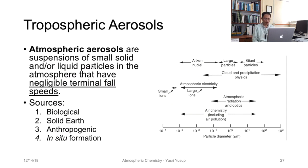These particles with negligible terminal fall speeds are suspended in the atmosphere. There are four sources of atmospheric aerosols: biological sources, the solid earth, anthropogenic or human-related emissions, and in situ formation — particles that are formed in the atmosphere itself.